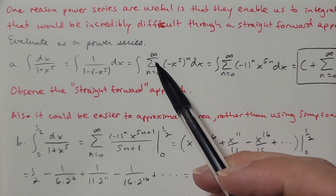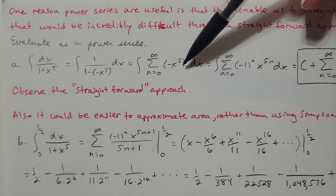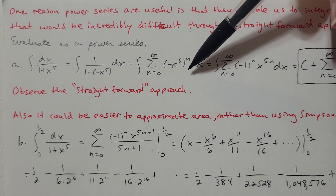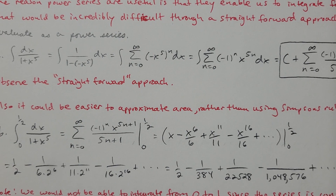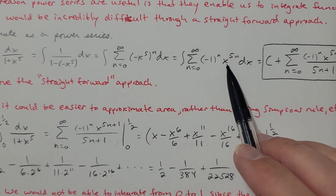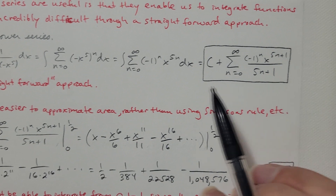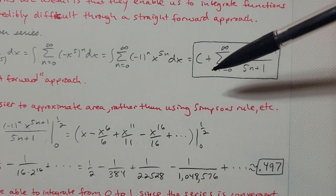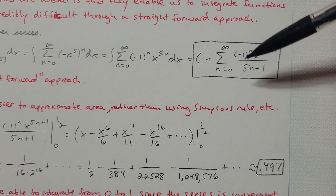Using the series notation, I have the integral of the summation as n=0 to infinity of a·rⁿ dx, where a=1 and r=(-x⁵)ⁿ, don't forget the dx. Simplifying the power of n, I get (-1)ⁿ · x^(5n) dx inside. Now we're ready to integrate this series.